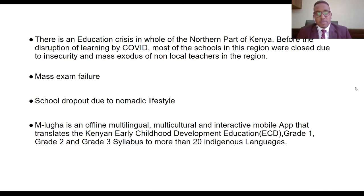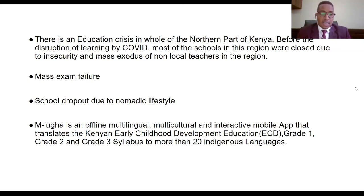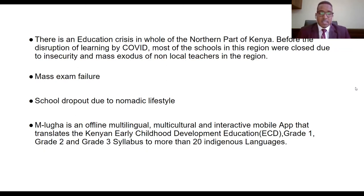In Northern Kenya — which is 70% of the landmass — there is a very serious educational crisis. Even before COVID disruption, most schools were closed due to insecurity. Non-local teachers were targeted by Al-Shabaab and other security threats, causing a mass exodus of teachers from the region. The nomadic lifestyle also means people move away from schools, leading to high numbers of dropouts and mass exam failure. Resources are limited, teachers are scarce, and access to learning content is very limited. The academic challenge is beyond explanation. MLUGA offline helps by allowing children to learn on the go with a solar-powered tablet — even when they move with their families, they can still keep up with the syllabus using digital content in their own mother tongue.